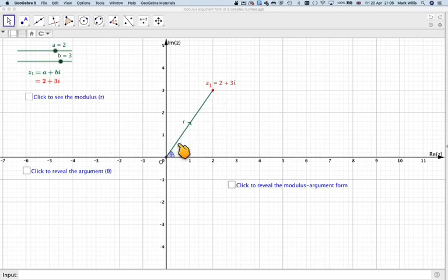Now the modulus is the length of this line here, drawing from the origin to where the complex number is. We can find the length of the line by just using Pythagoras' theorem on this right-angled triangle here. So that will be 2 squared plus 3 squared, which will be in this case root 13.